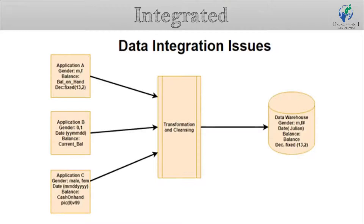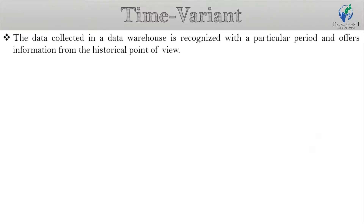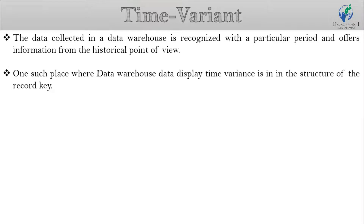The next characteristic is time variant. The time horizon for a data warehouse is quite extensive compared with operational systems. The data collected in a data warehouse is recognized with a particular period and offers information from the historical point of view. It contains an element of time, either explicitly or implicitly. One such place where data warehouse data displays time variance is in the structure of the record key.